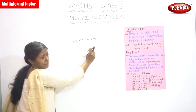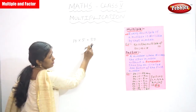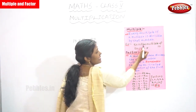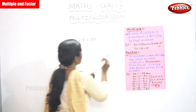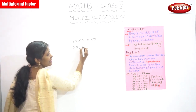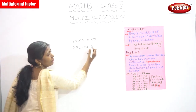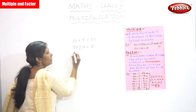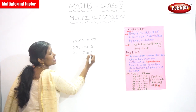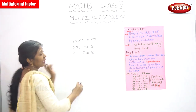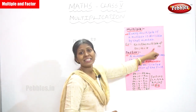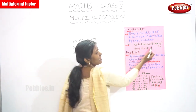This is the multiplication table — 10 into 5 is equal to 50. If you divide 50 by 10, you can get 5. Again, 50 divided by 5, you can get 10. So this is the proper explanation of that sentence: 50 is the multiple of 10.